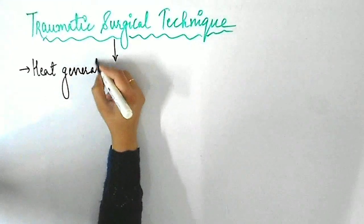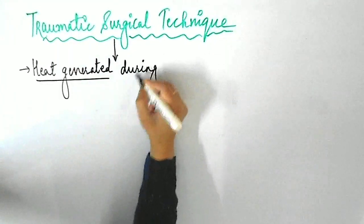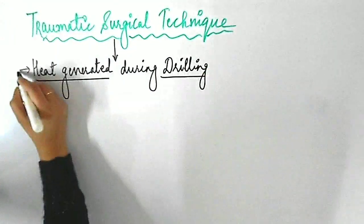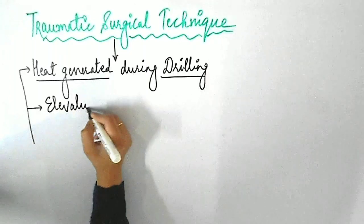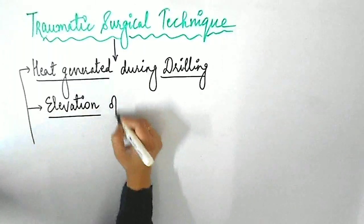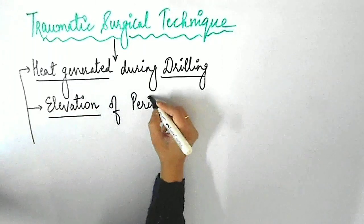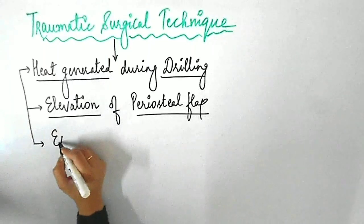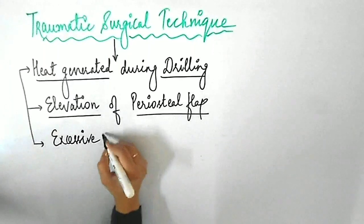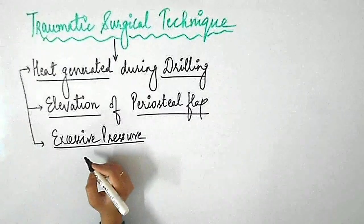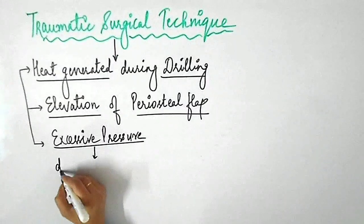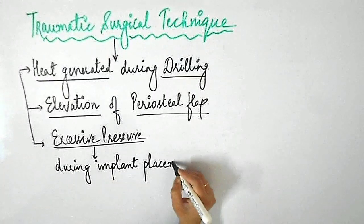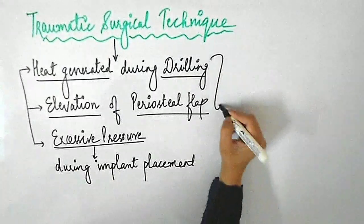Next is traumatic surgical technique. Surgical trauma due to heat generated during drilling, elevation of a periosteal flap, and excessive pressure at the crestal region during implant placement may contribute to crestal bone loss during the healing period.